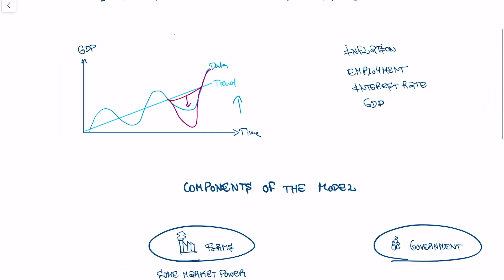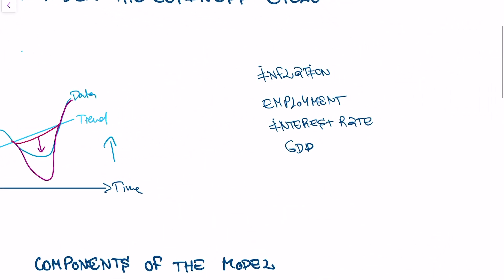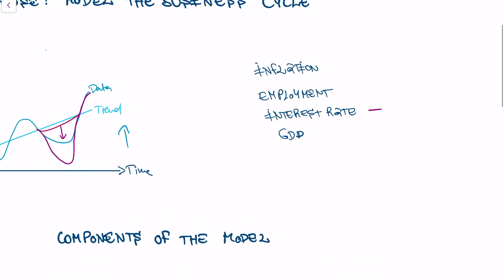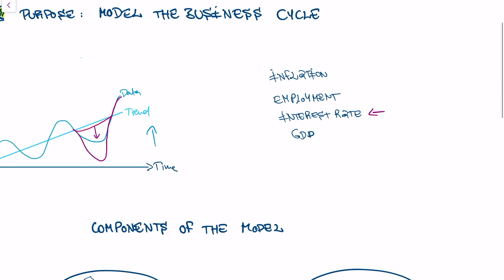For that, we have to understand how inflation, employment, interest rate, and GDP all interact together, and what actually happens if we change the interest rate as a central bank. Is that good for employment? Is it bad for unemployment? What happens to GDP? What happens to inflation?